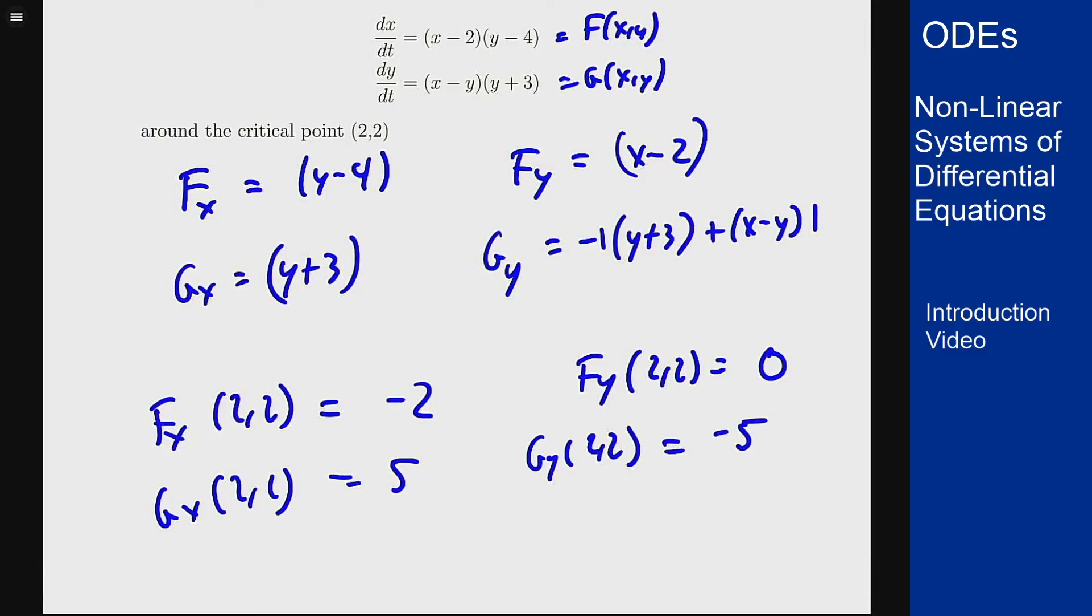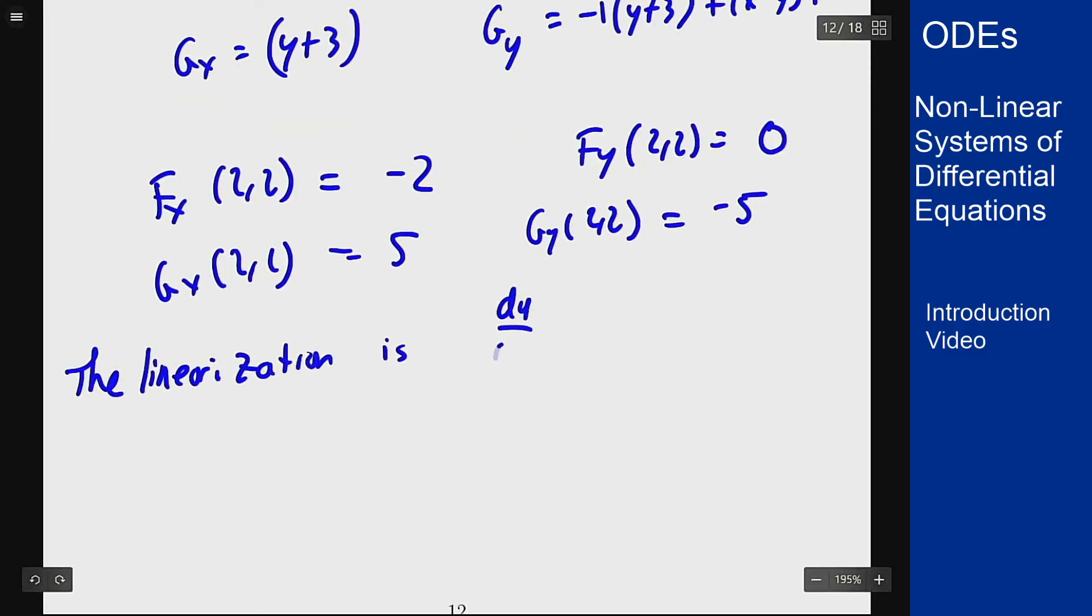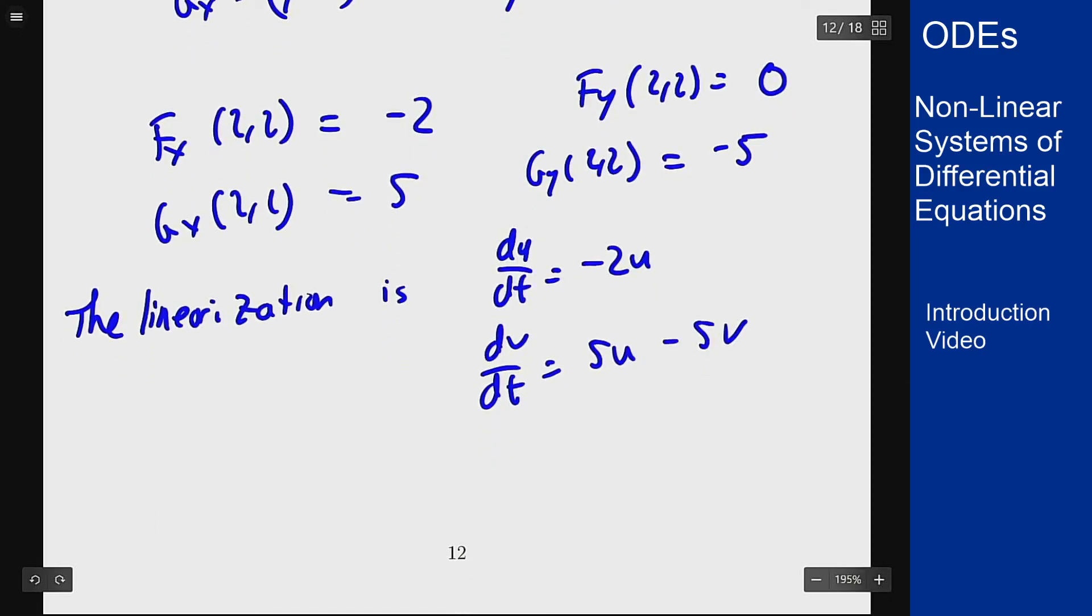So the linearization is du/dt = -2u and dv/dt = 5u - 5v, or in matrix form: X' = [-2, 0; 5, -5]·X. We know how to analyze this—it will be a nodal sink at this point. It's triangular, so eigenvalues are -2 and -5. That means for this non-linear system, this point behaves like a nodal sink that will funnel in towards this value.